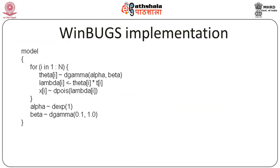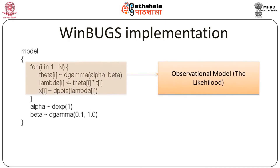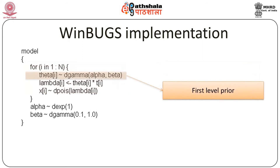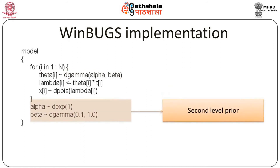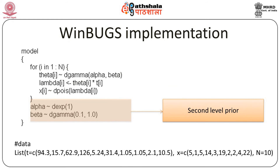We implement this in WinBUGS. The Poisson distribution is represented as `x_i ~ d.pois(lambda_i)` and `theta_i ~ d.gamma(alpha, beta)` — note the syntax `d.pois` for Poisson distribution. θᵢ is the first-level prior as specified in the theoretical model. The second-level prior involves α and β appearing in the θᵢ distribution, and the data is in vector format.